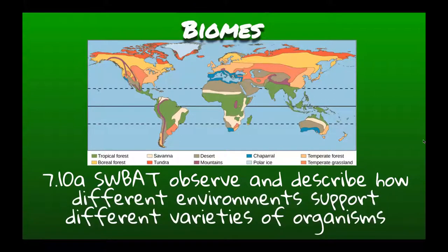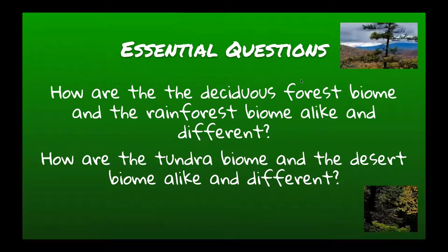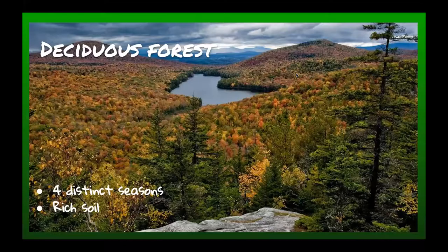Hey everybody, it's Miss Ram. By the end of my part of the field trip, you'll be able to observe and describe how different environments support different varieties of organisms. We are going to focus on deciduous forests, rainforests, and deserts. Our essential questions are: how are the deciduous forest and rainforest biomes alike and different, and how are the tundra and desert biomes alike and different?